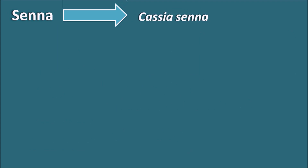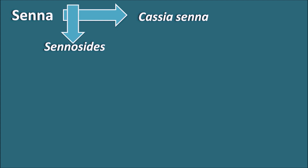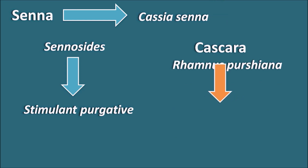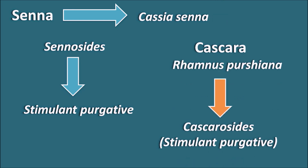Next is senna, coming from Cassia species such as Cassia senna. Senna is not a single drug but a combination containing sennosides, and it is used as a stimulant purgative. Similarly, cascara comes from Rhamnus purshiana, containing cascarosides, and is also used as a stimulant purgative. Both senna and cascara are anthraquinone glycosides used as stimulant purgatives.